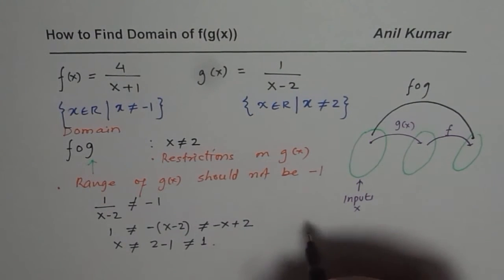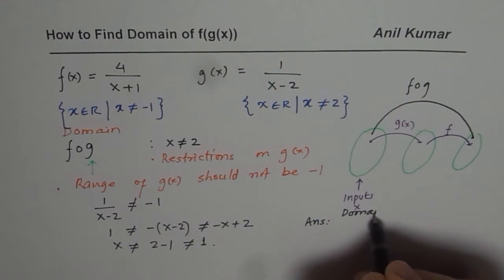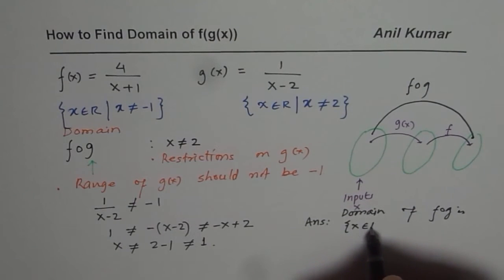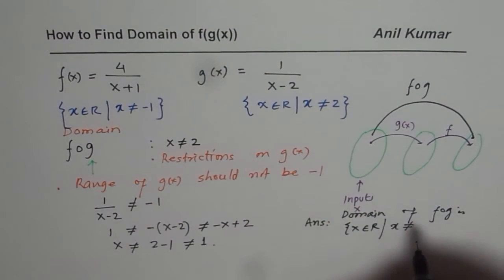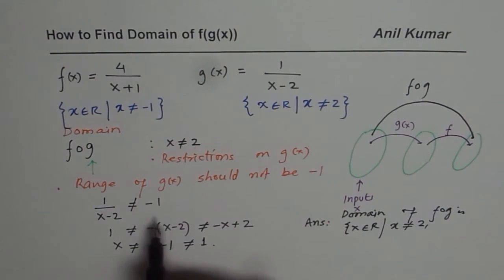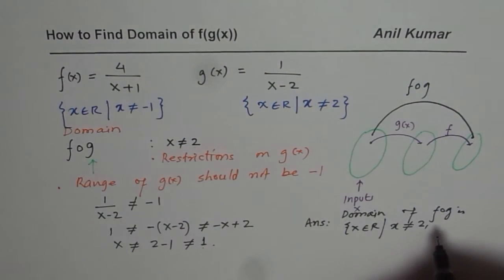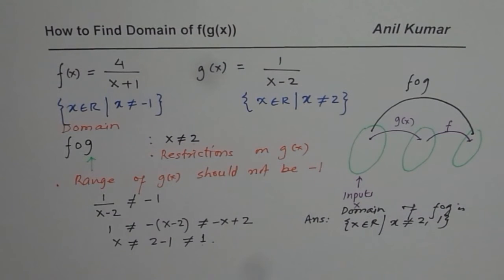So now we can write down the answer. The domain of f∘g is x belongs to real numbers such that x is not equal to 2, which is the restriction from g(x), and x is not equal to 1, which is the value that would give an output of -1 from g(x). That is how you find the domain of a composite function without finding the composite function itself.